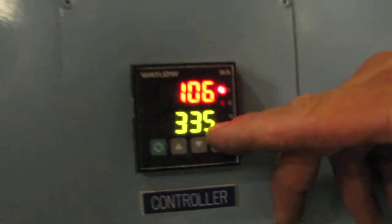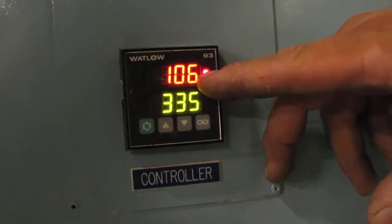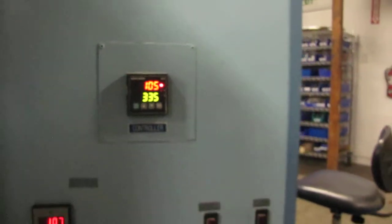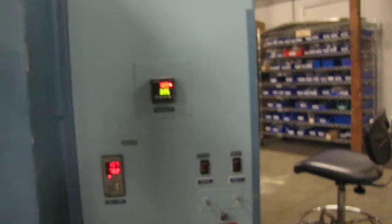If you put it on 335 then it'll show you where it's at and it'll go all the way up to 335. And you can set it up to 600 Fahrenheit.